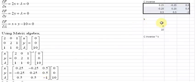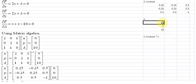We also have a k vector which is this vector here, 0, 0, and 10. All we need to do is to multiply C inverse with k.